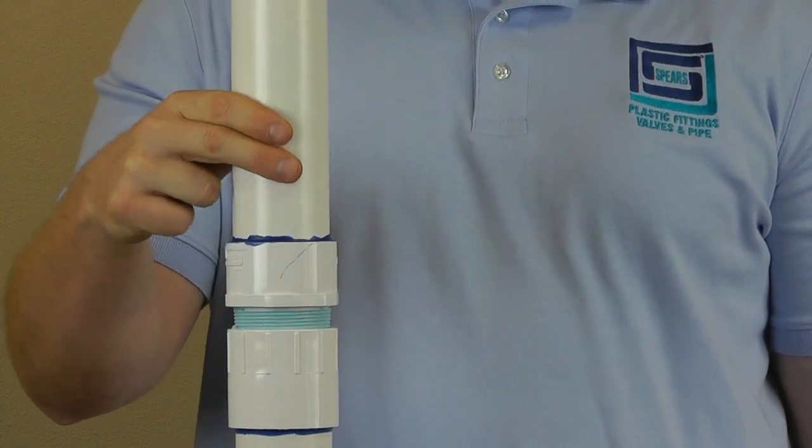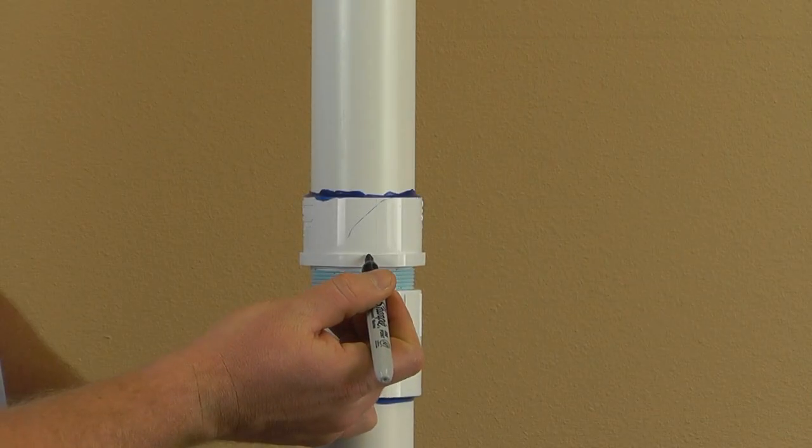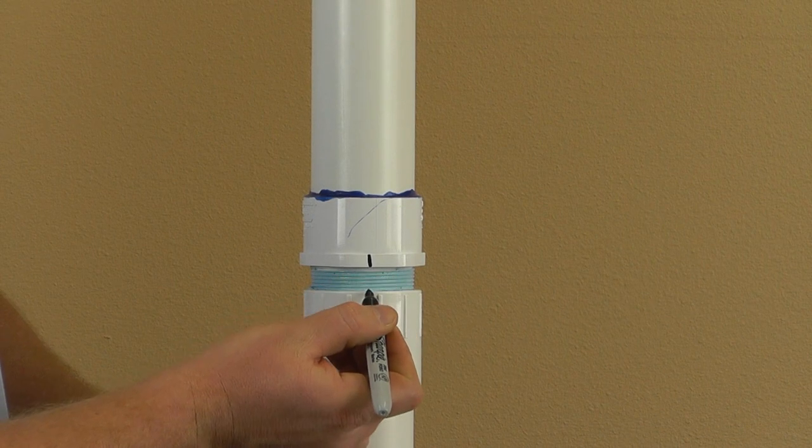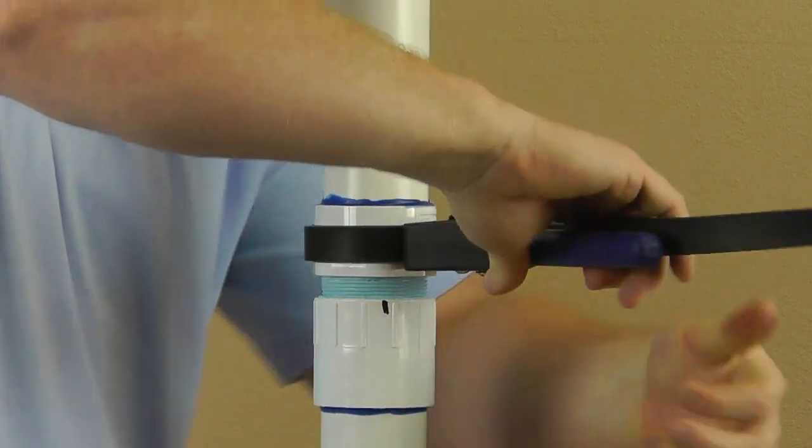Once finger tight, use a marker to make alignment marks on each fitting. Now using a strap wrench, tighten the fitting using no more than two complete turns.